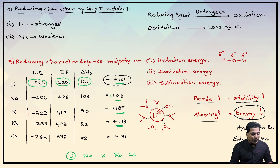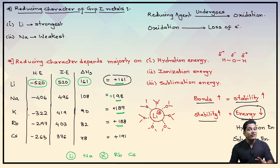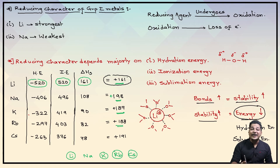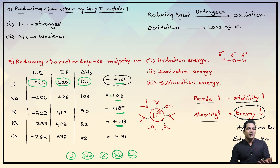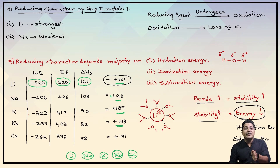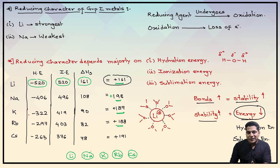After lithium at 161, potassium at 187 gives electrons second, rubidium at 188 gives third, cesium at 191 gives fourth, and at 198 — the highest energy required — that would be sodium, meaning sodium is the most difficult or weakest reducing agent. If you start increasing energy, lithium gives at 161, then potassium at 187, rubidium at 188, cesium at 191, and sodium at 198.